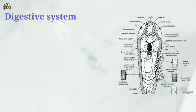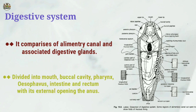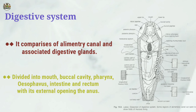The digestive system comprises the alimentary canal and associated digestive glands. The alimentary canal is divided into the mouth, buccal cavity, pharynx, oesophagus, intestine, and rectum, with its external opening, the anus.